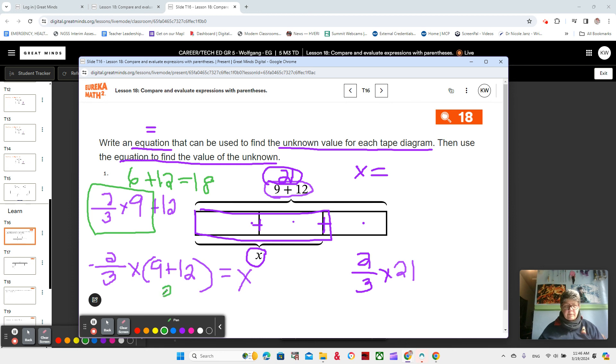All right, so 9 plus 12 is 21, and two-thirds of 21. We can multiply straight across, which would be 42-thirds. So then 42 divided by 3. Well, I'm going to do it. 3 times 10 is 30, and that would leave 12 left. I know that 12 divided by 3 is 4. 4 times 3 is 12. And then I'm going to put these two together. So that would be 14. So that means X is equal to 14.